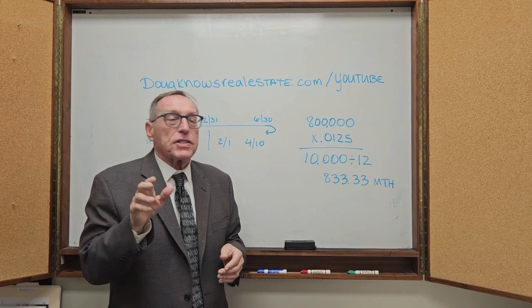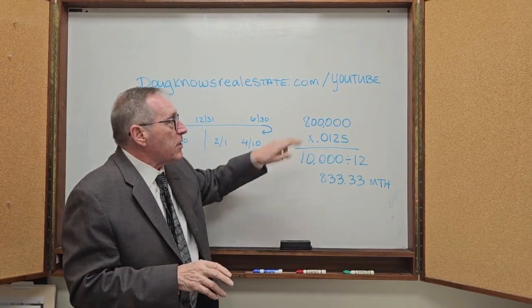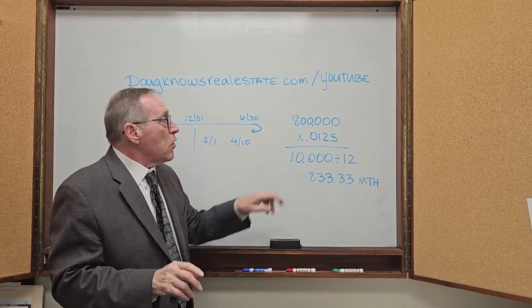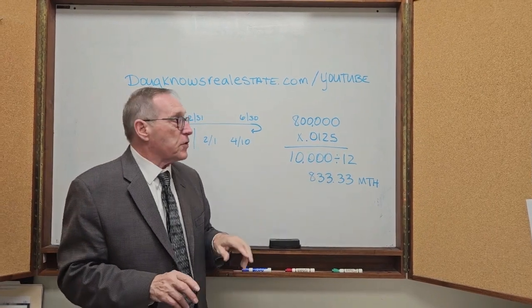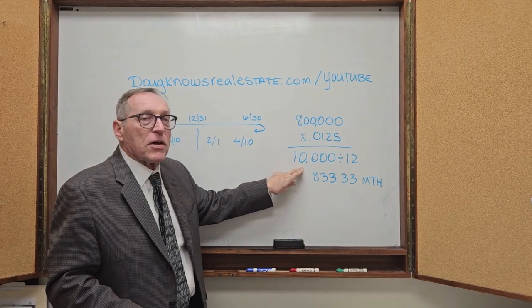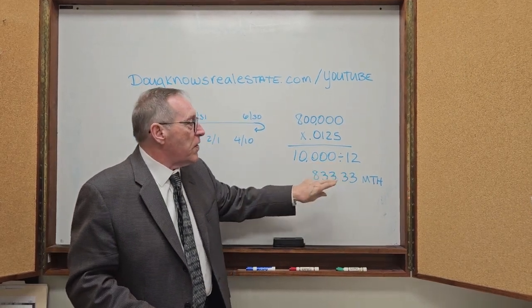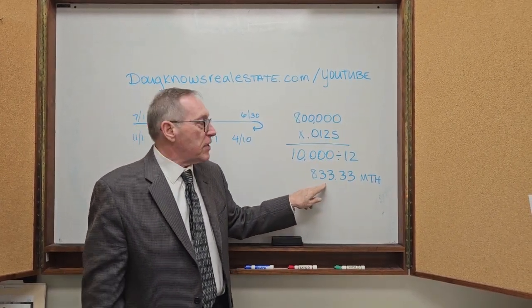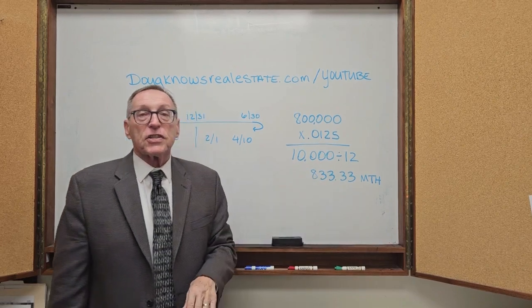And how much are the taxes in California? Let's say a purchase is $800,000. We use to start off one and a quarter percent. So 10,000 times 0.0125 is $10,000 divided by 12. Those taxes are $833.33 a month.